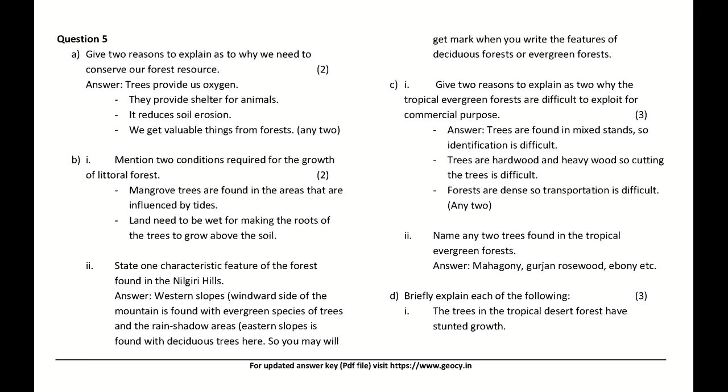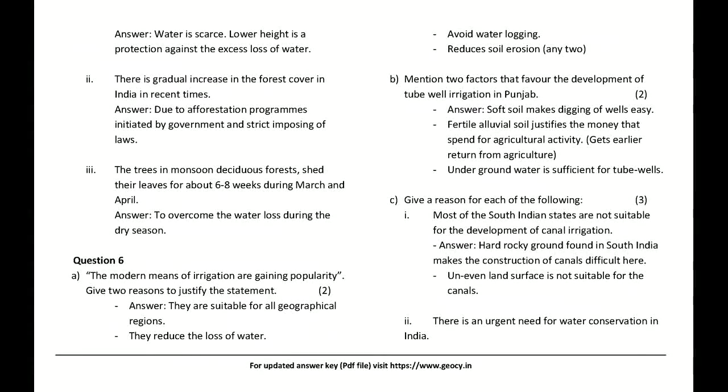Briefly explain: The trees in the tropical desert forest have stunted growth — water is scarce, and lower height is a protection against excess loss of water. There is a gradual increase in forest cover in India in recent times — due to afforestation programs initiated by the government and strict imposition of laws. Trees in monsoon deciduous forests shed their leaves for about six to eight weeks during March and April — to overcome water loss during the dry season.